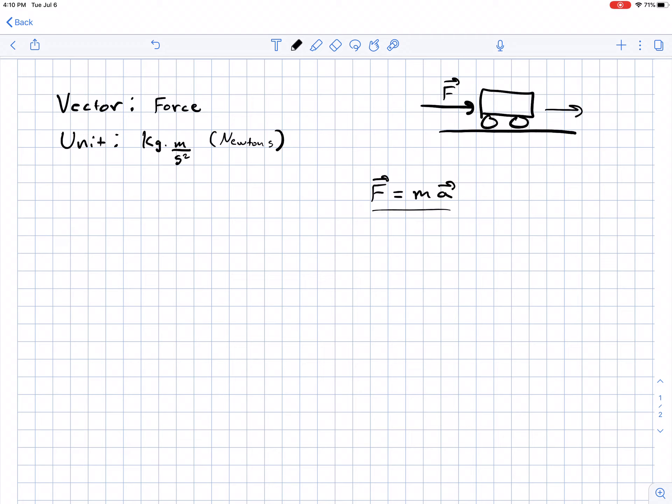Now, as you may recall, how did we write A in terms of the velocity? A is delta V over delta T.